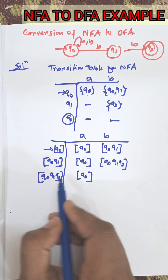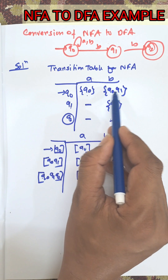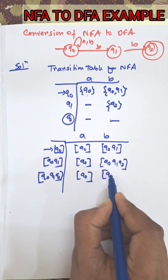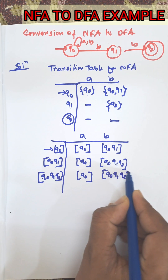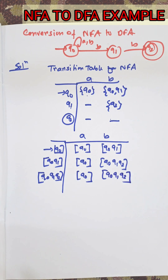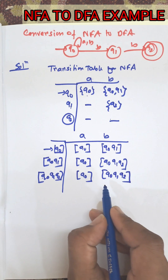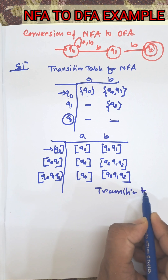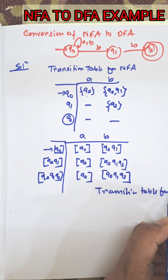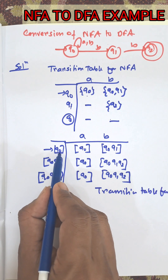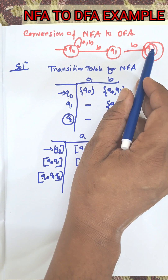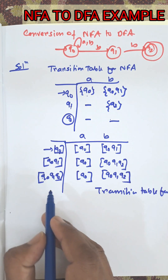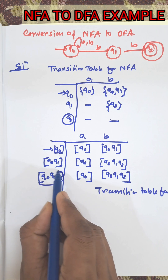From {Q0, Q1, Q2} on input B: Q0 on B gives {Q0, Q1}, Q1 on B gives Q2, and the union is {Q0, Q1, Q2}. So this is the transition table for DFA. The initial state and outputs of the NFA — the accepting state of NFA, which is the final state of NFA, will also be the final state of the DFA.